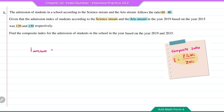So the composite index can be found by multiplying 120 with 60 plus 130 times 40, divided by 60 plus 40, which is the total weightage. This gives us the answer of 12400 over 100. So the composite index is equal to 124.